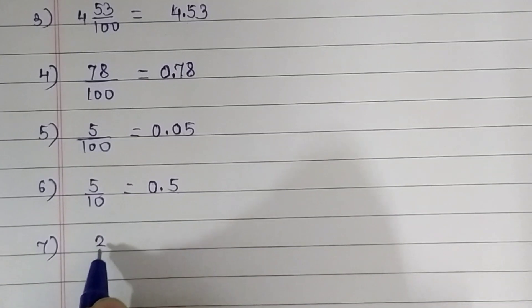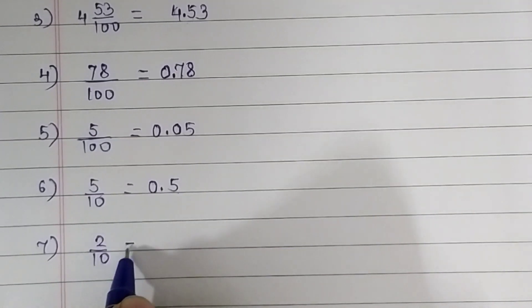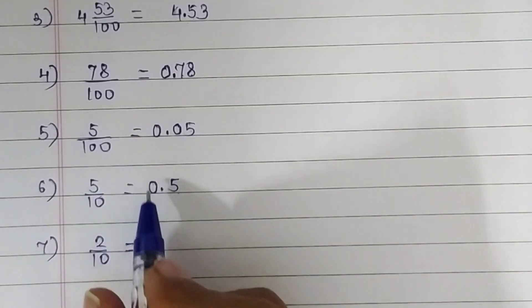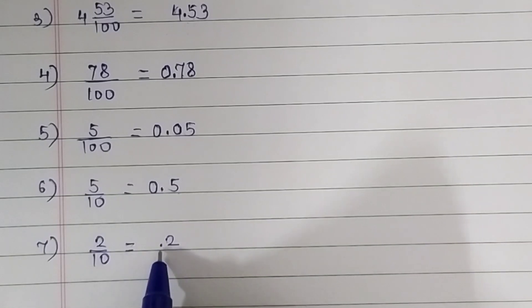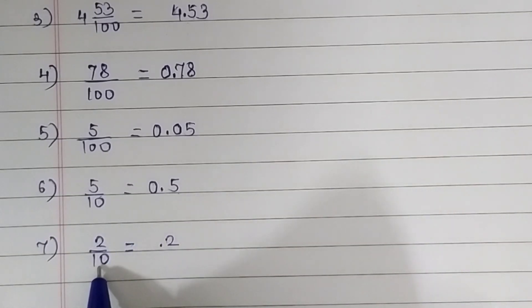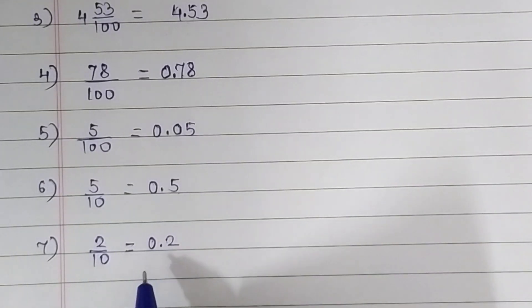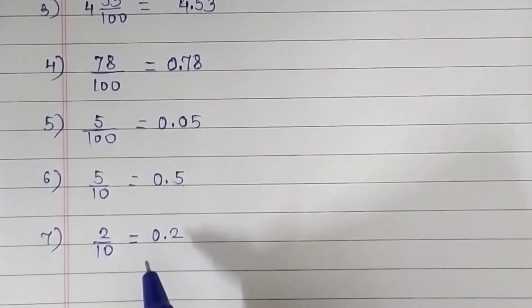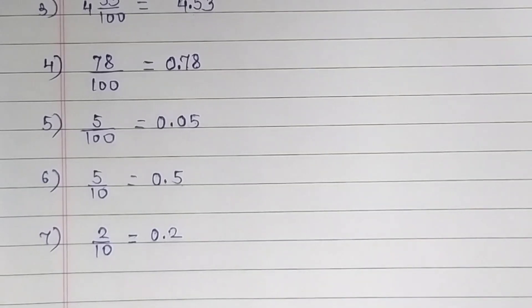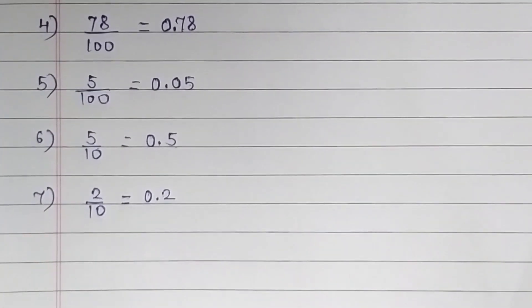Seventh question: 2 upon 10. Just like our sixth question, we write 2, move one place from the right, and place a decimal point here. The denominator has only one zero, so the decimal fraction is 0.2. Its reading is 0.2.